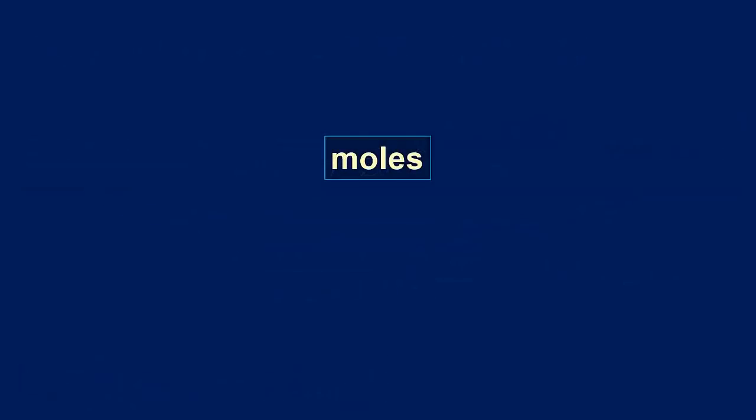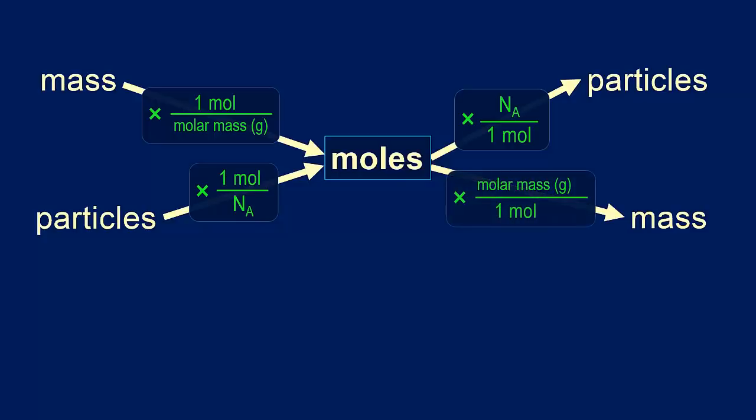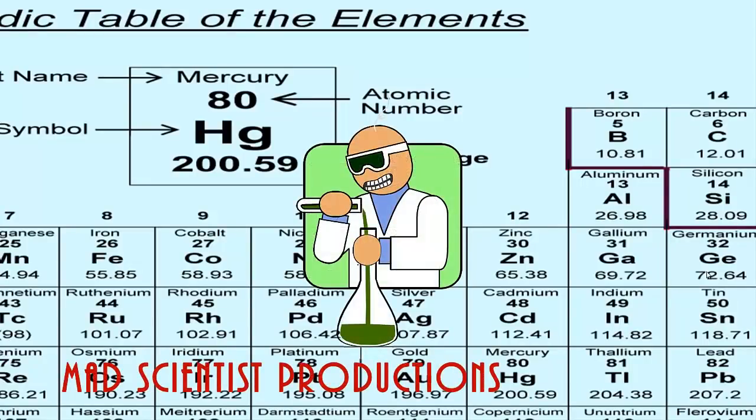These mole conversion problems follow a specific pattern that we can summarize on a map. Converting mass to moles, we use the conversion factor of 1 mole over the molar mass. Particles to moles uses 1 mole over Avogadro's number. Moles to particles uses Avogadro's number divided by 1 mole. And mole to mass, we use molar mass per mole. If you'd like to learn how to apply mole conversions to stoichiometry, click here. And that is it for mole conversions. See ya!